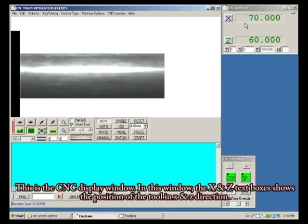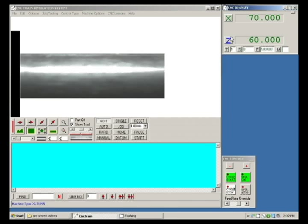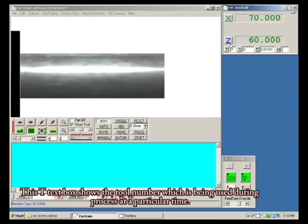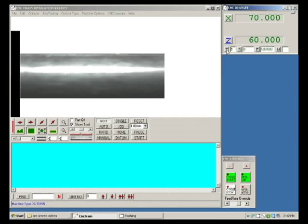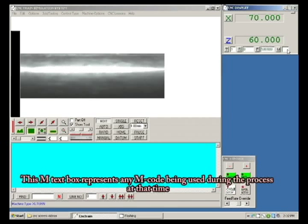This is the CNC display window. In this window, the X and Z text boxes show the position of the tool in X and Z directions. By clicking these X and Z buttons, we can move the tool manually when the machine is linked with the software. The T text box shows the tool number being used during the process at a particular time. The S text box indicates the spindle speed, and F text box indicates the feed rate. The M text box represents any M code being used at that time.